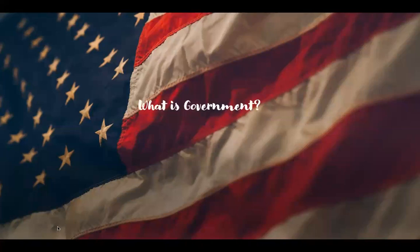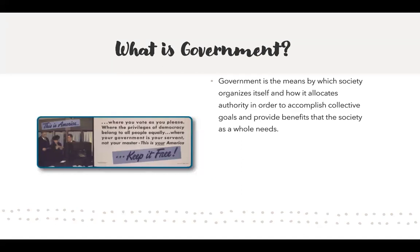What is government? That's the first thing we're going to talk about. Government is a means by which a society organizes itself and how it allocates authority in order to accomplish collective goals and provide benefits that a society as a whole needs. I chose this picture that says, 'This is America, where you vote if you please, where the privileges of democracy belong to all people equally, where your government is your servant, not your master. This is your America, keep it free.' I think it's important because what you're going to learn in this class is about American government and how we're different than other countries — different than China, different than Russia. That freedom is what makes us that example.